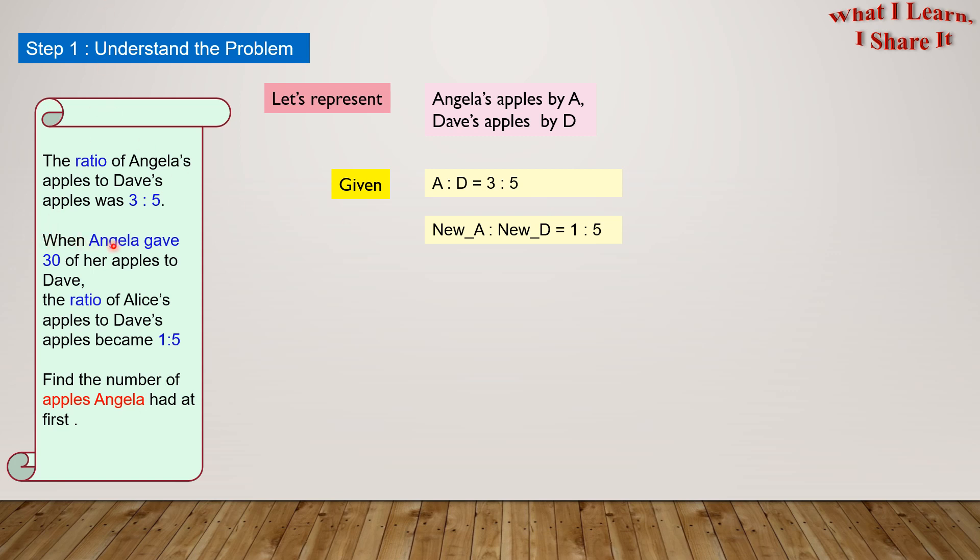When Angela gave 30 of her apples to Dave, the ratio of Alice's apples to Dave's apples became 1 is to 5. So new A is to new D equals 1 is to 5.